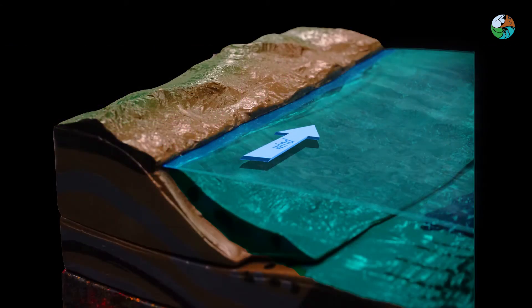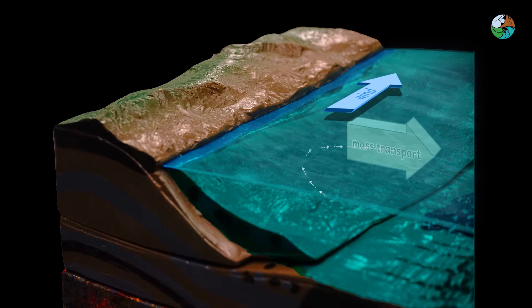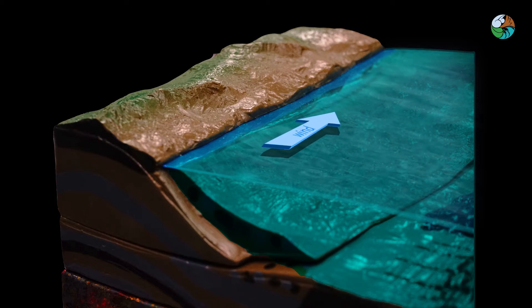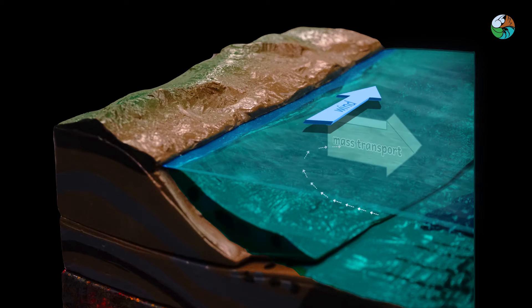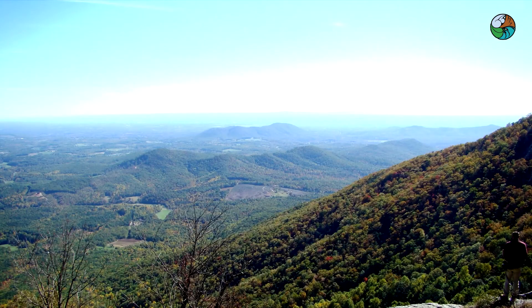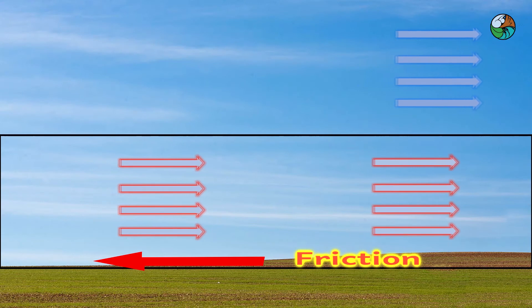In reality, there are two types of Ekman layers. One occurs at the surface of the ocean due to surface winds that drag on the surface of the ocean. Another type, which is demonstrated in this experiment, occurs at the bottom of the atmosphere and ocean due to frictional forces over rough surfaces.